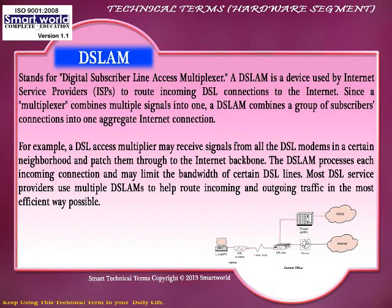A multiplexer combines multiple signals into one. A DSLAM combines a group of subscriber connections into one aggregate internet connection.